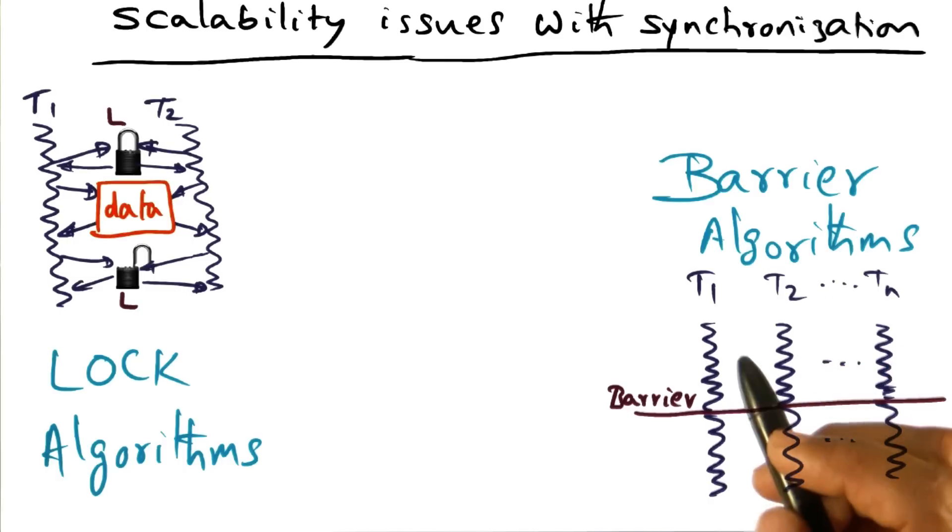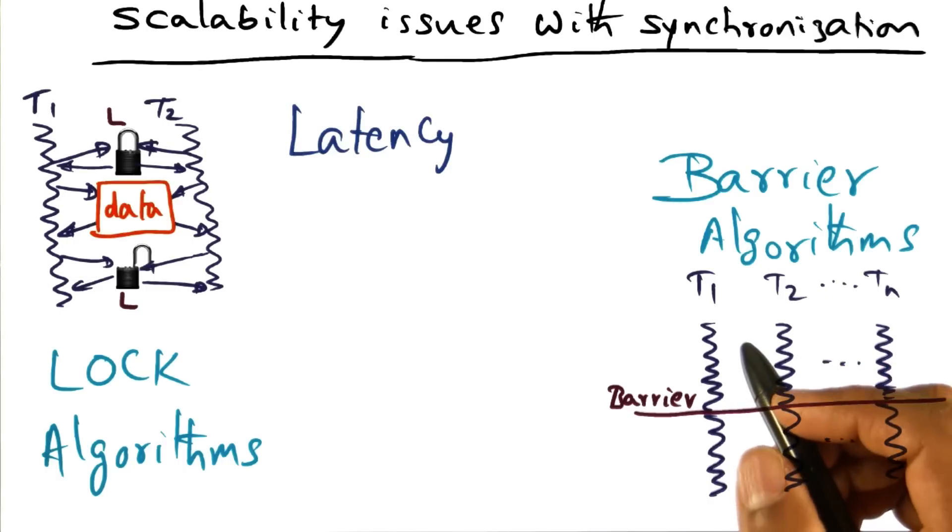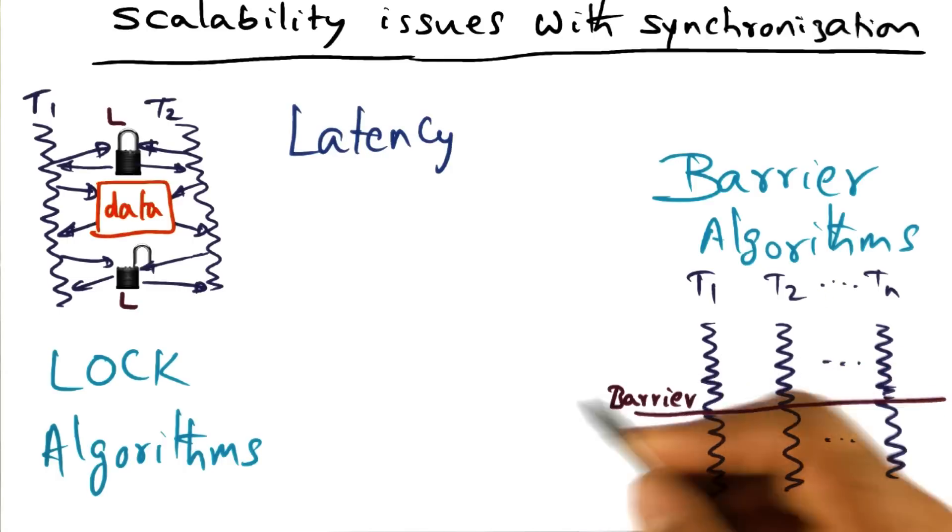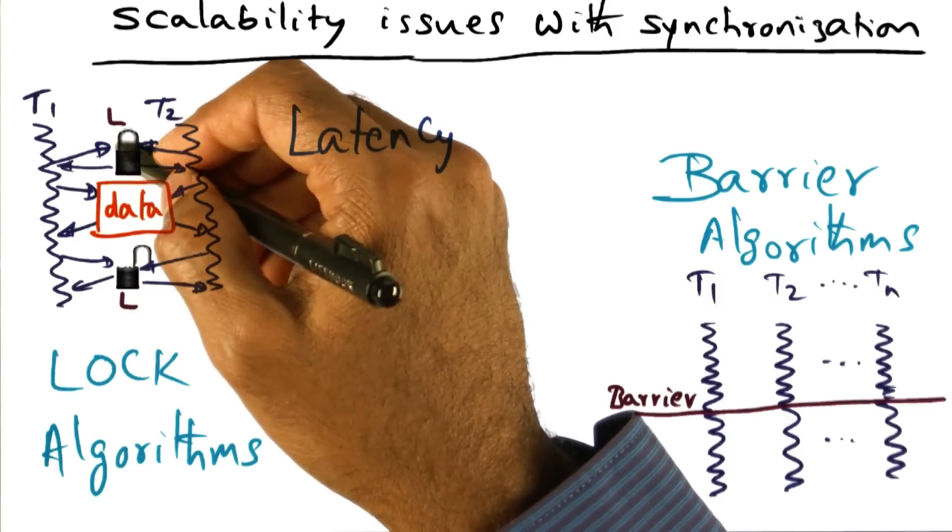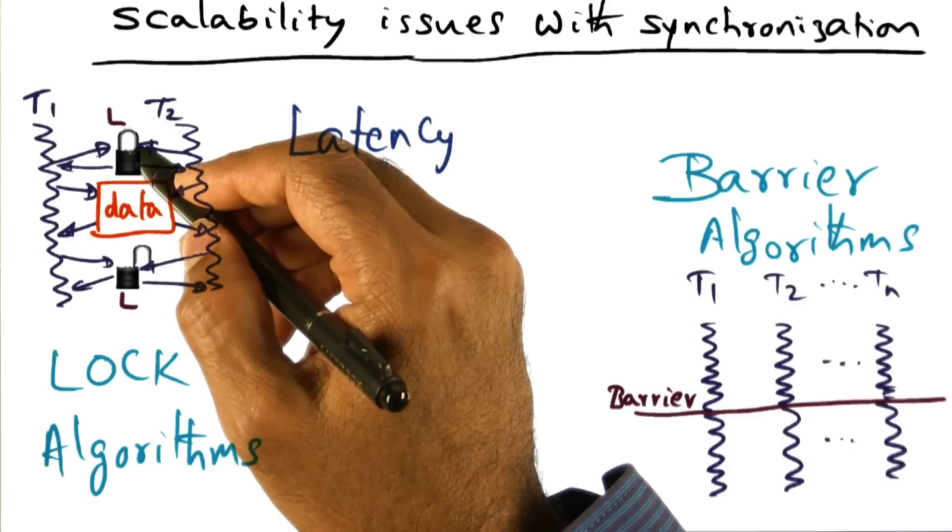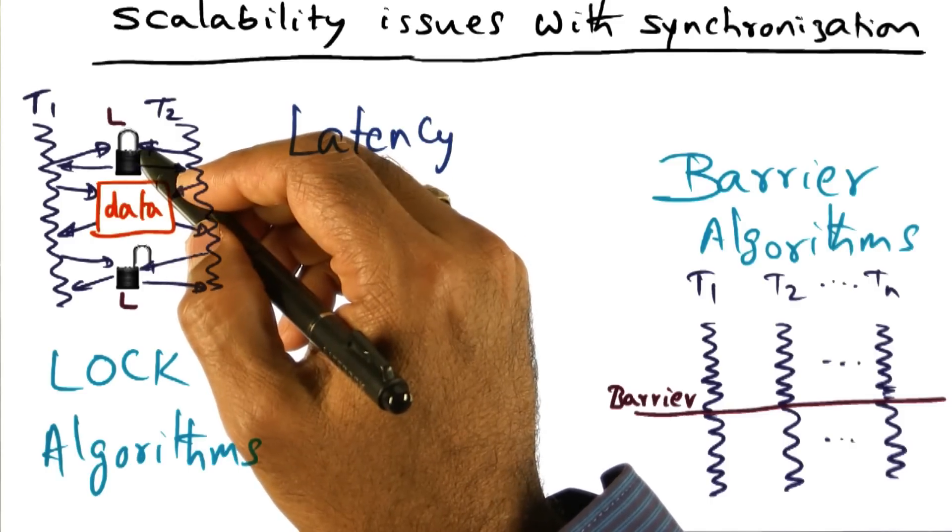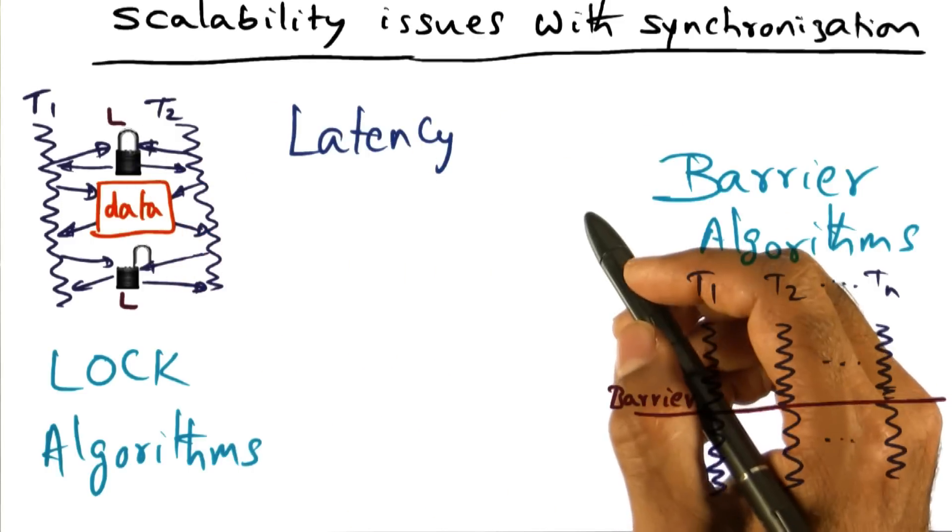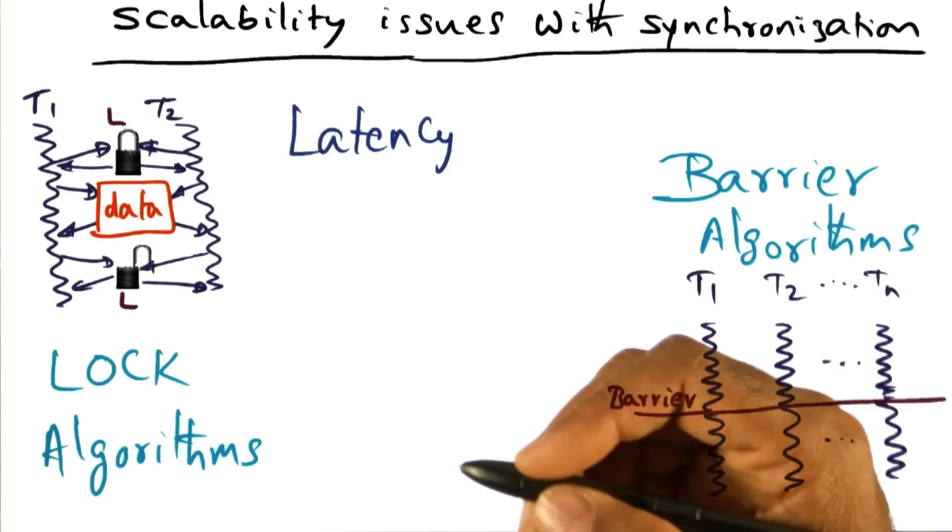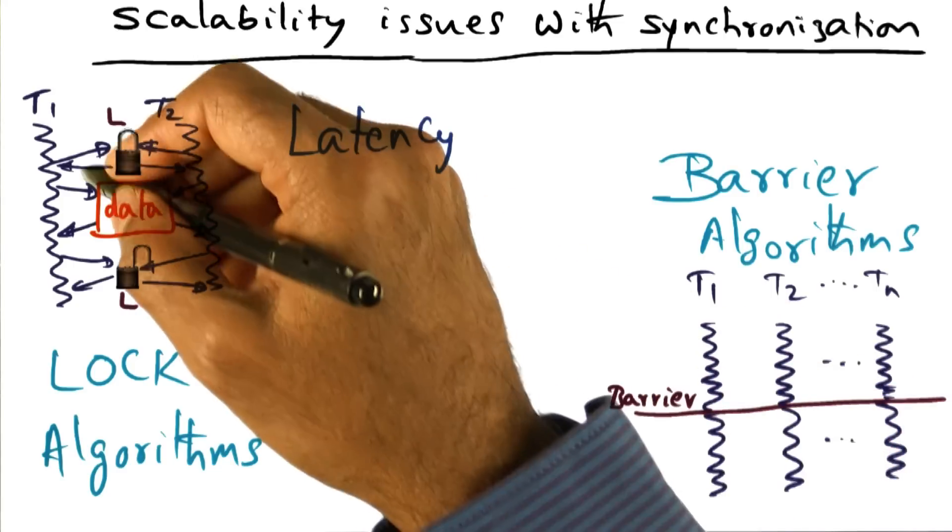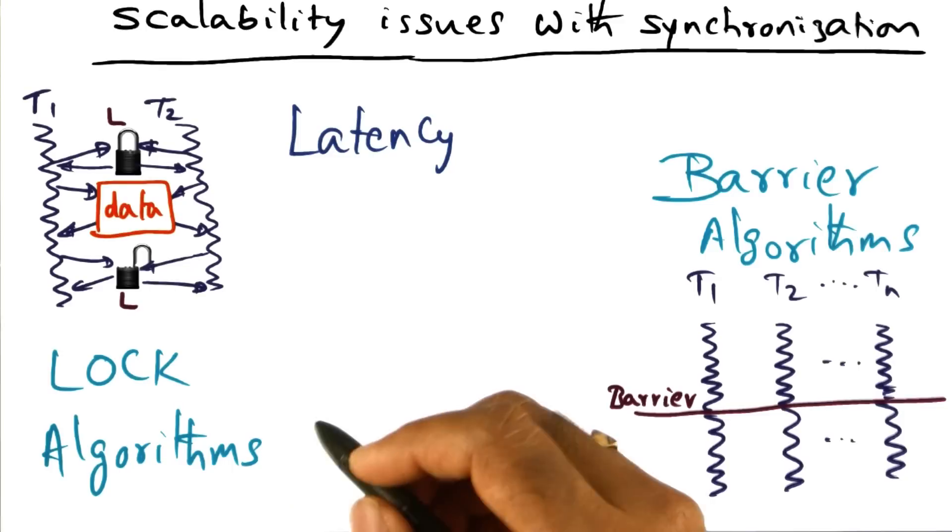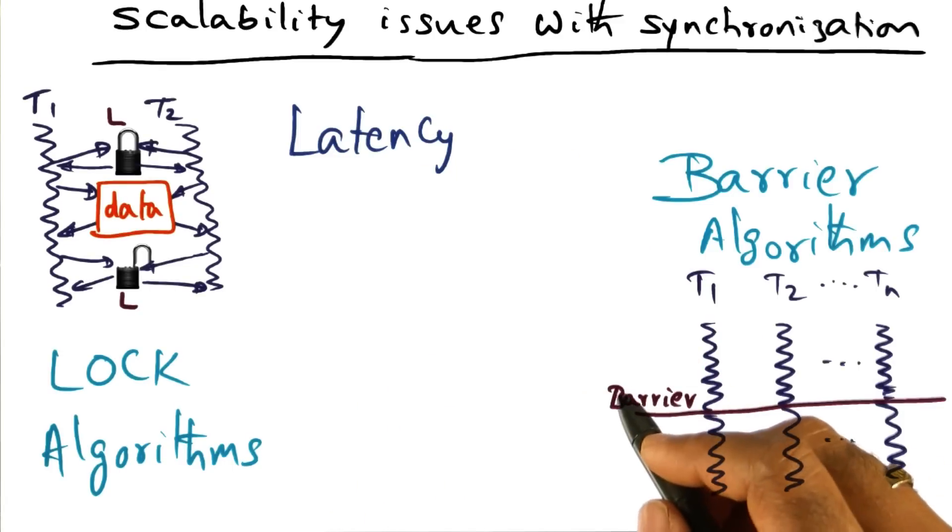The sources of inefficiencies that come about is first of all latency. What do we mean by that? If this thread wants to acquire this lock, it has to do some operation. It has to go to memory, get that lock, and make sure that nobody else is competing with it. That's the latency - the time that is spent by a thread in acquiring the lock.